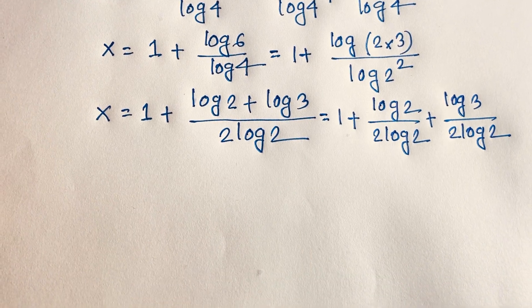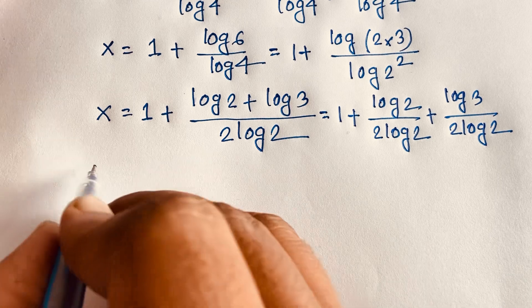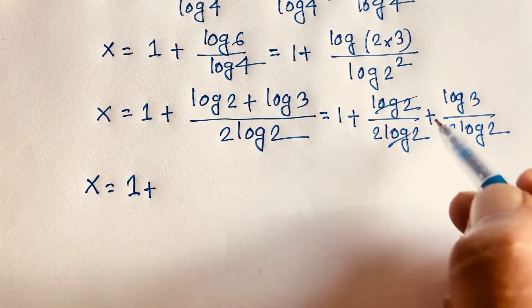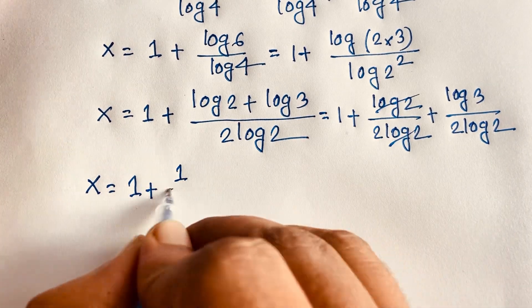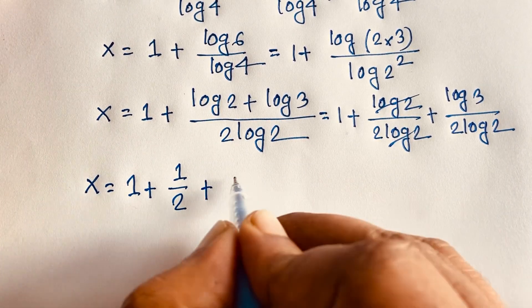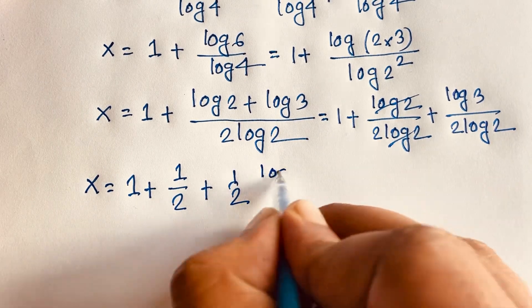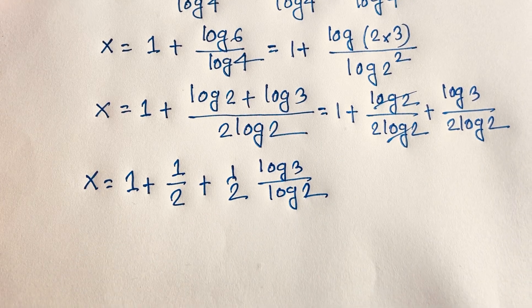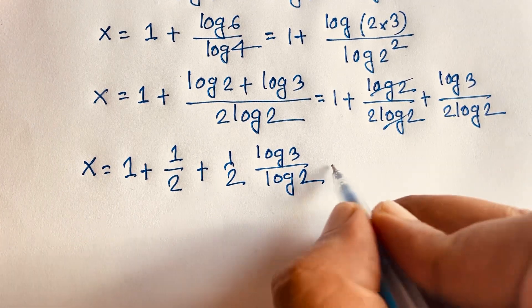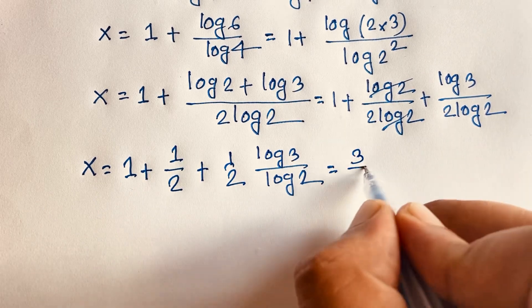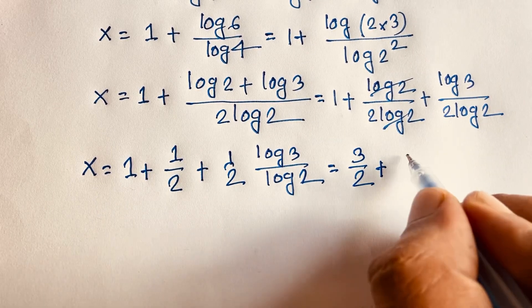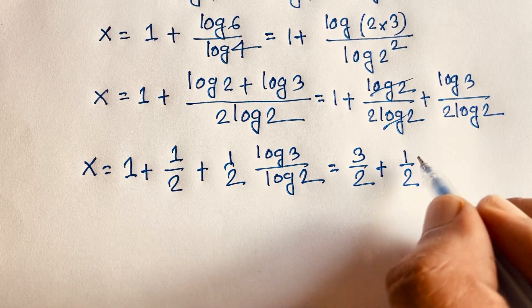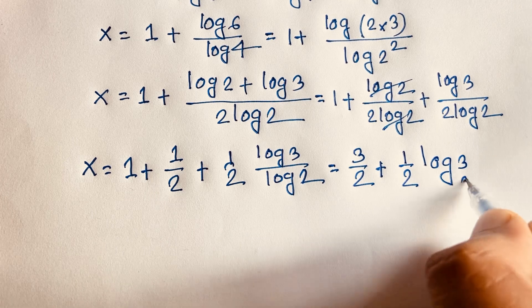Now at this moment, x is equal to 1 plus, and if I cancel out log 2 over log 2, we get 1 over 2. So here it is 1 over 2 plus 1 over 2 times log 3 over log 2. Then, 1 plus 1 over 2 equals 3 over 2, plus 1 over 2, and log 3 over log 2, which according to logarithm rules equals log base 2 of 3.